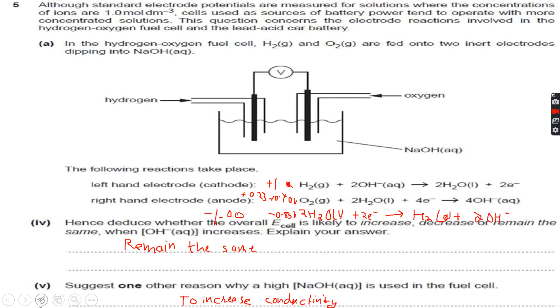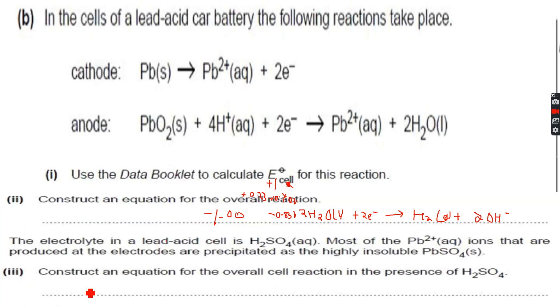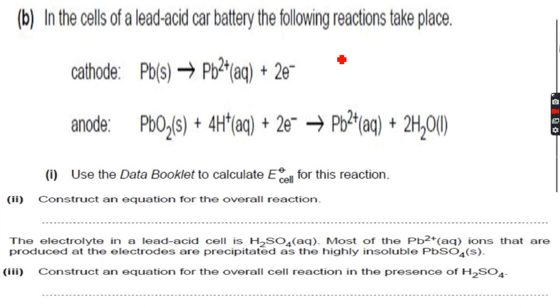Now let's move forward to a different question. In the cells of a lead-acid car battery, the following reactions take place. For the cathode, let's use the equation where the electrons are on the left.